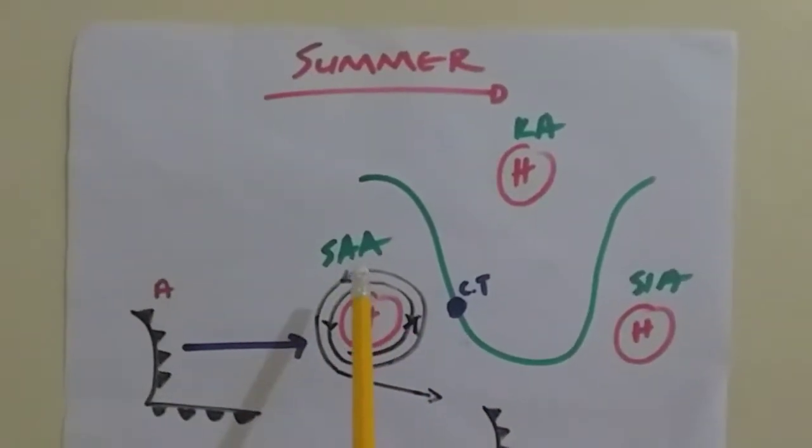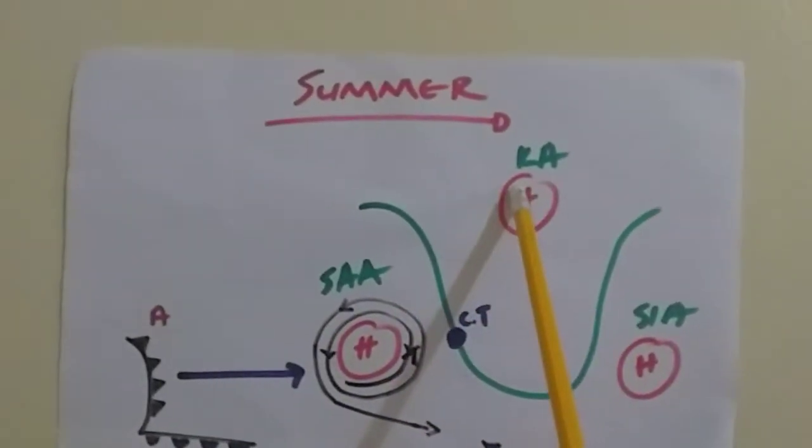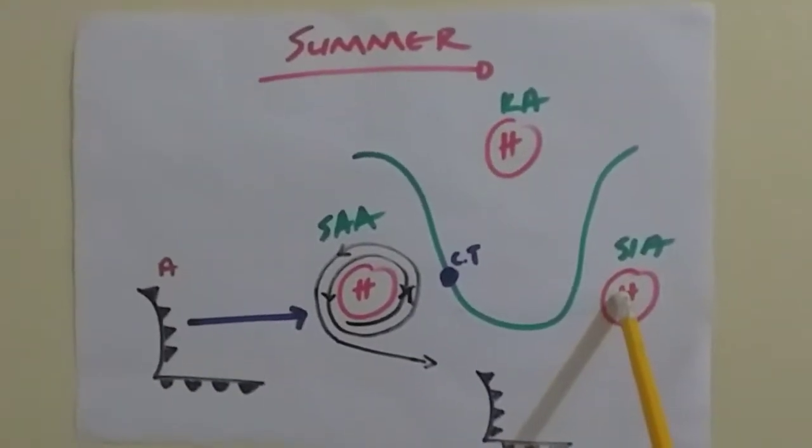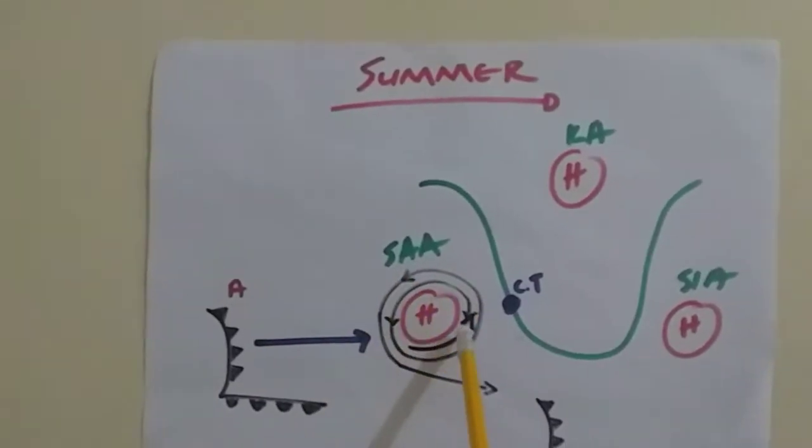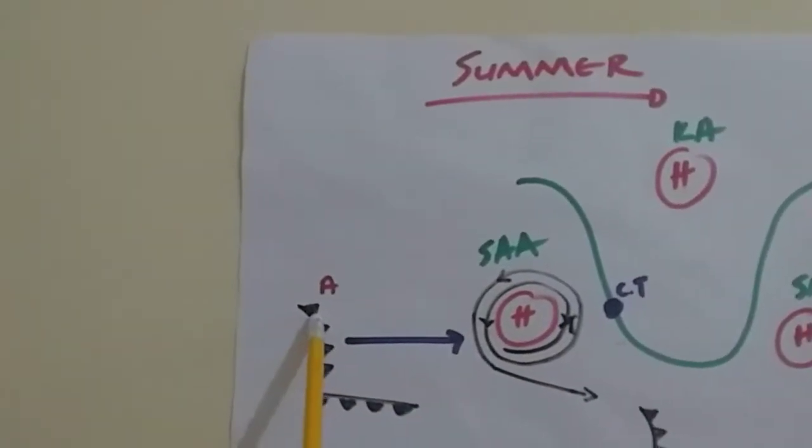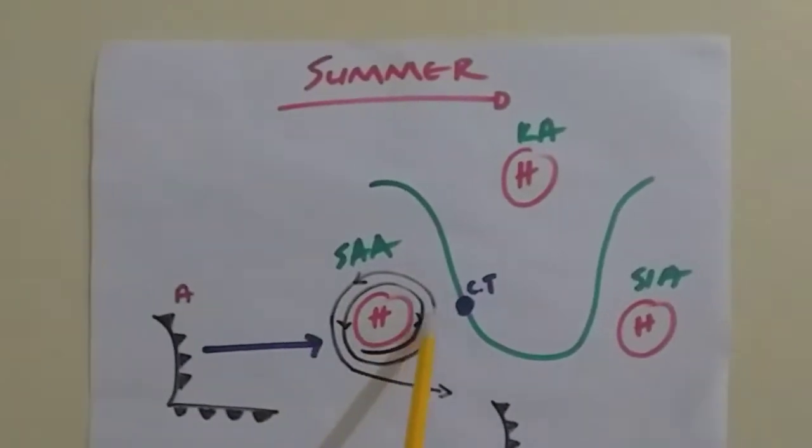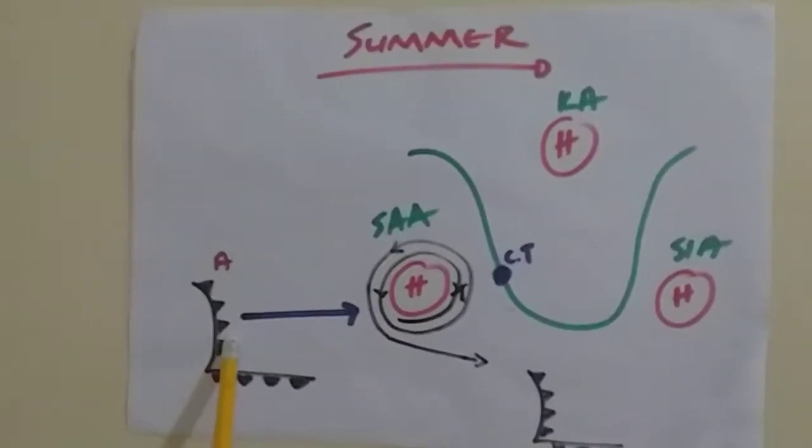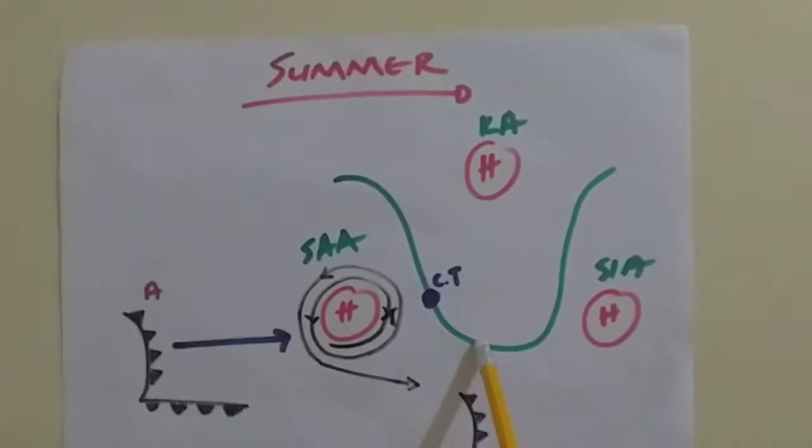And so in summer, we have the South Atlantic anticyclone right here, the Kalahari anticyclone up there, and then the South Indian anticyclone down here. So air from the South Atlantic anticyclone rotates outwards anticlockwise. So here, the mid-latitude cyclone approaches South Africa, but then due to this anticlockwise air, the mid-latitude cyclone is pushed further down away from South Africa. So in summer, the mid-latitude cyclone doesn't affect South Africa.